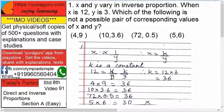Here x and y are two variables that move in inverse direction. What do you mean by inverse direction? If x moves up, y moves down. When x is 12, y is 3.